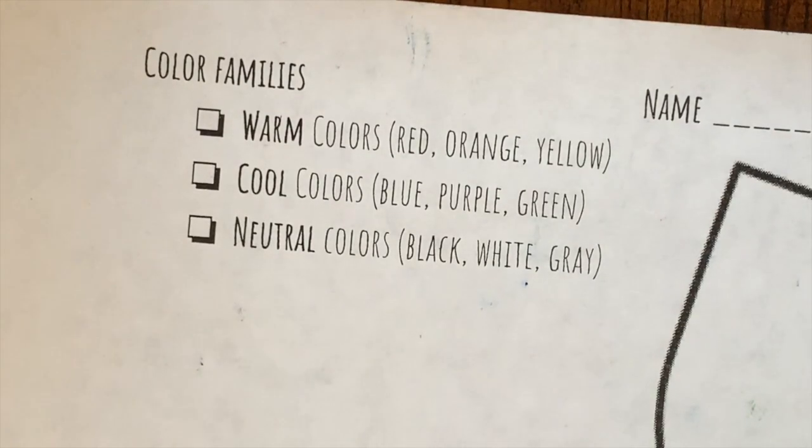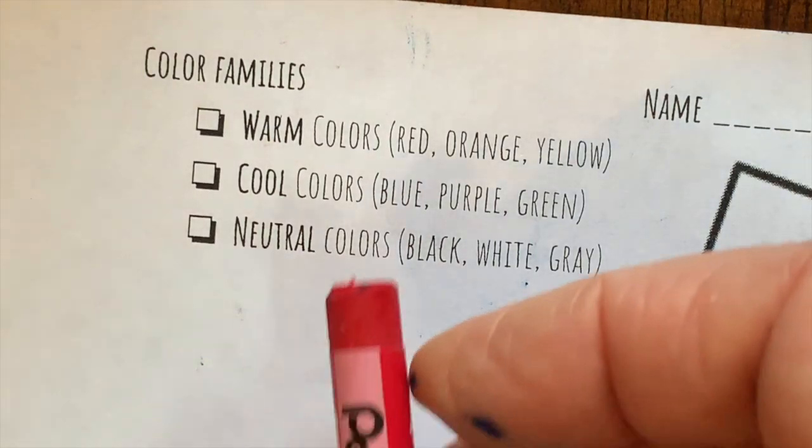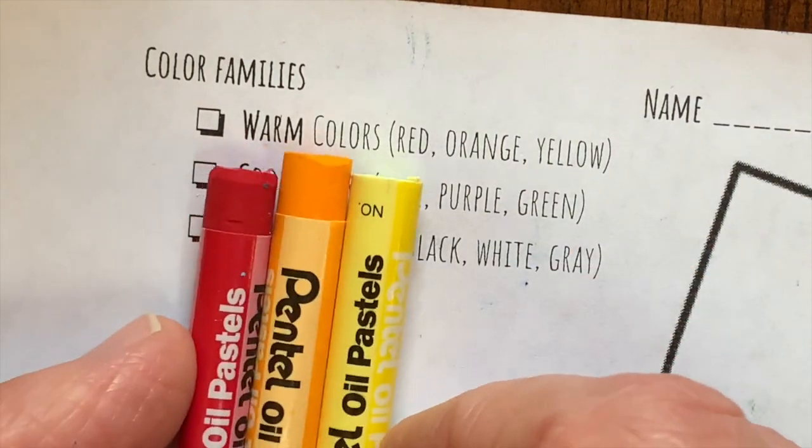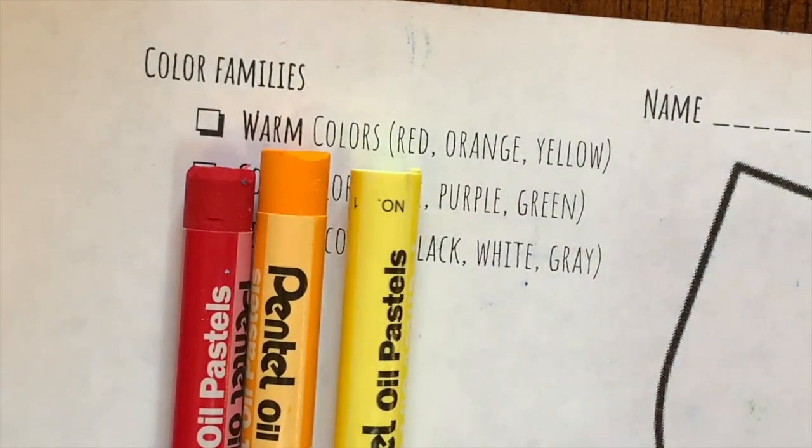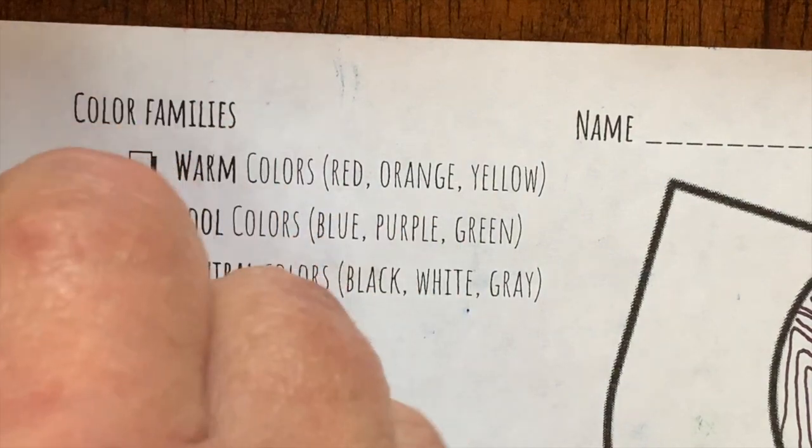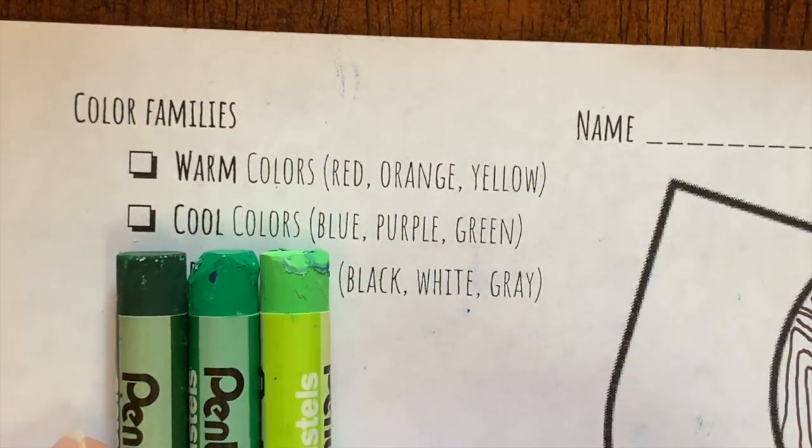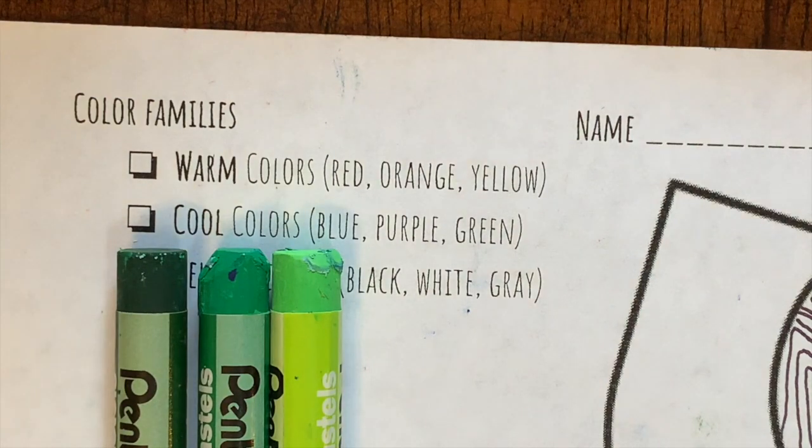We're going to add colors of different values to our shapes. Choose three oil pastels from the same color family. For example, I might choose red, orange, and yellow. That gives me a dark, medium, and light version of the warm colors. Similarly, I could choose dark green, medium green, and light green to have colors in the cool color family. If you like neutral colors, black, white, and gray is a good starting point.